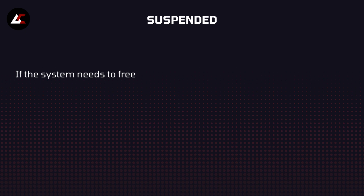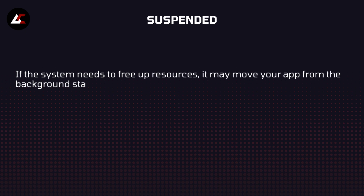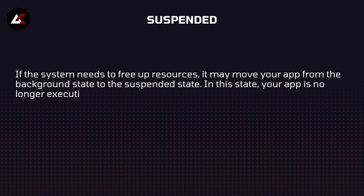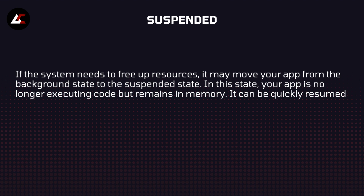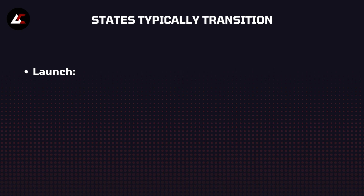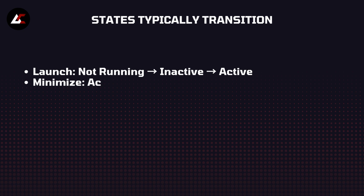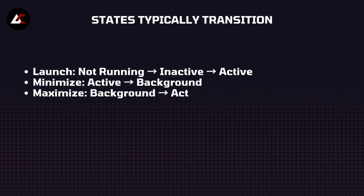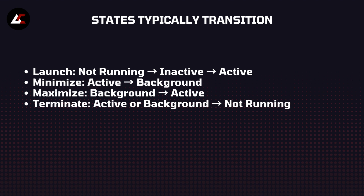Suspended state — if the system needs to free up resources, it may move your app from the background state to the suspended state. In this state, your app is no longer executing code but remains in memory. It can be quickly resumed to the background state when needed. State transitions are: launch — not running to inactive to active; minimize — active to background; maximize — background to active; and terminate — active to background and not running.